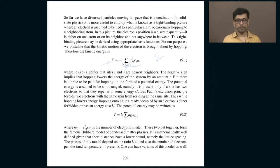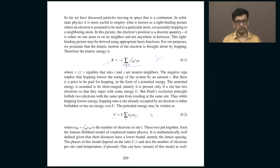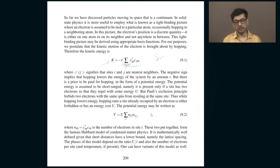If only upspin is present (n_{i,up} = 1, n_{i,down} = 0), there is nothing to repel since we are only considering on-site repulsion. When both electrons have the same spin, Pauli exclusion prevents them from sitting on top of each other anyway. There is something called the extended model which includes next-nearest-neighbor repulsion as well, since two electrons with the same spin cannot sit on the same site but can still repel when sitting nearby.